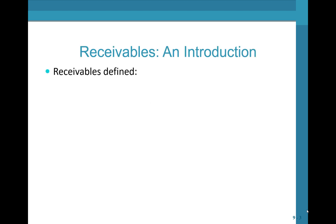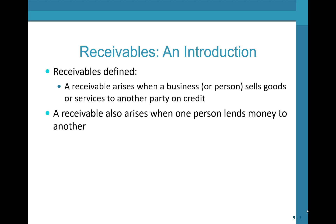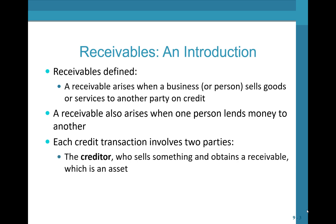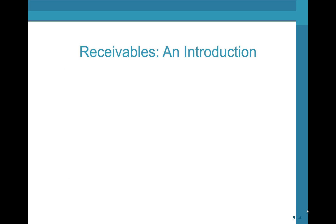Receivables defined. A receivable arises when a business or person sells goods or services to another party on credit. A receivable also arises when one person lends money to another. Each credit transaction involves two parties: the creditor, who sells something and obtains a receivable (which is an asset), and the debtor, who makes the purchase and has a payable (which is a liability).